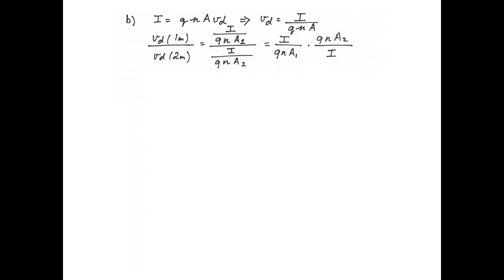Now remember, in the two segments of the rod, the current is the same, so those two currents cancel, and both rods are made of copper. So the charge of the charge carrier, Q, cancels, and the number of charge carriers per unit of volume, n, cancels also.